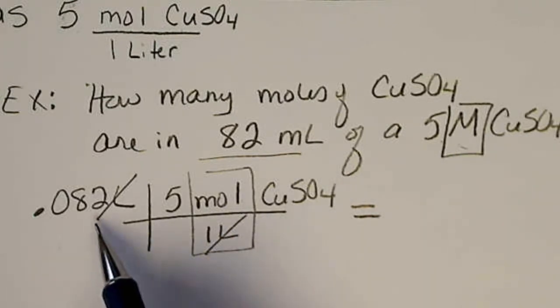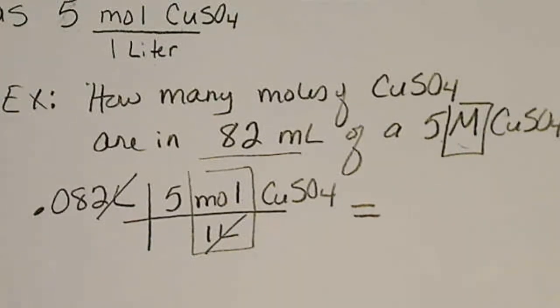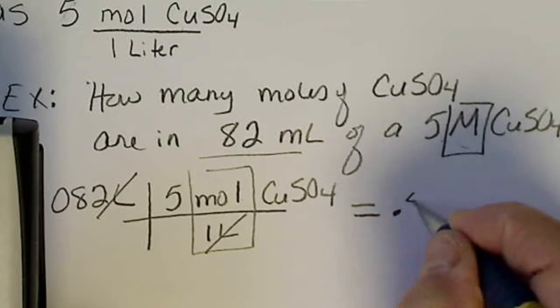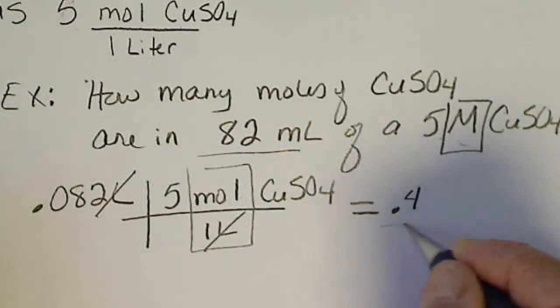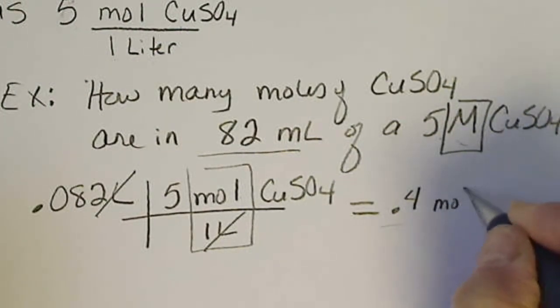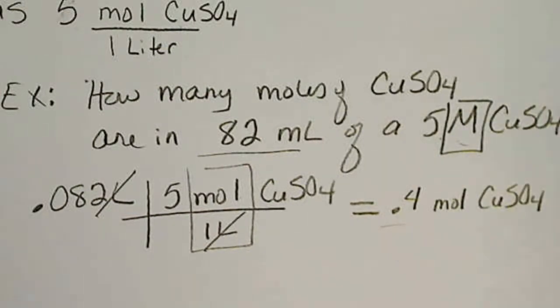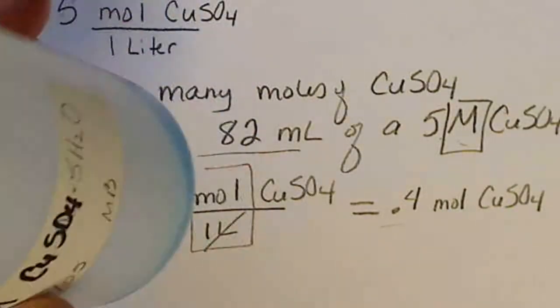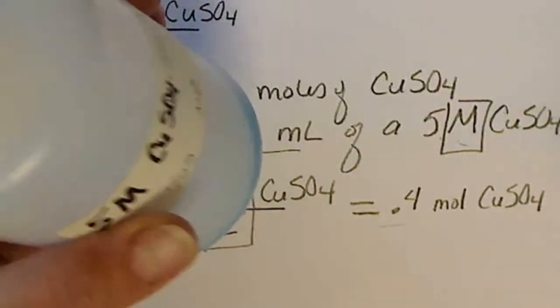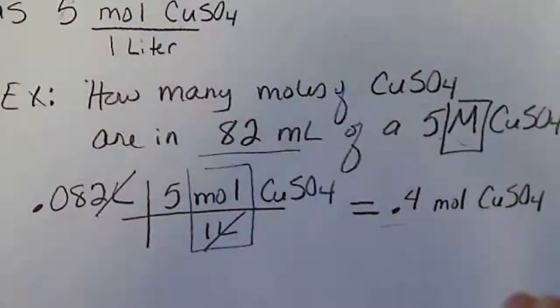So I should have picked an easier number, but five times 0.082 gives me the number 0.41. So we'll just use one significant figure. So that's how many moles of CuSO4 happen to be in this exact volume. Here I'm assuming that I know that this volume is 82 milliliters.